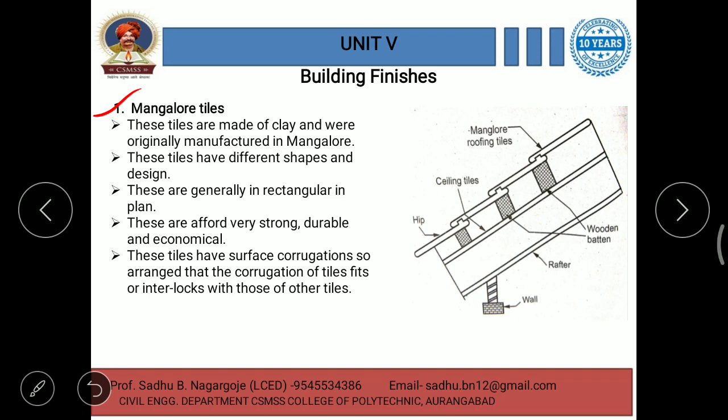Mangalore tiles are made up of clay and were originally manufactured in Mangalore, a place located in Karnataka, and the name is given as per that place. These tiles have different shapes and designs and are generally rectangular in plan. They are very strong, durable, and economical. These tiles have surface corrugations arranged so that the corrugation of one tile fits or interlocks with those of adjacent tiles.